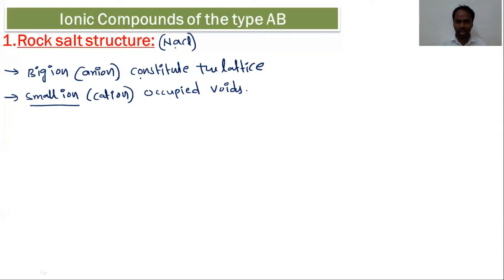When anions pack together as spheres, some unoccupied spaces called voids are generated. These voids are occupied by the cations. So in the maximum 99% of cases, anions constitute the lattice and cations occupy the voids. Now let us come to the rock salt structure.